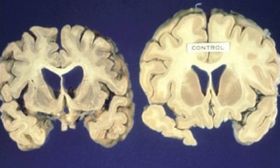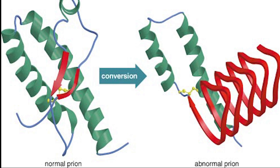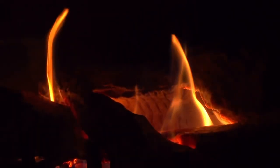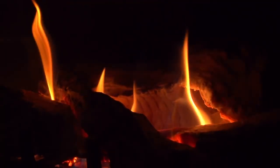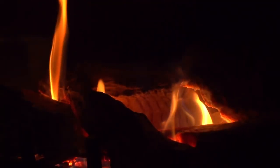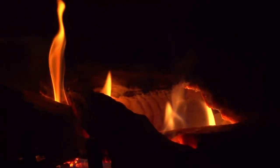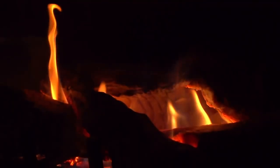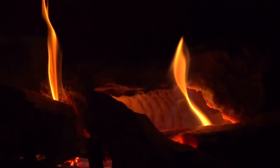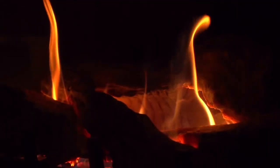BSE is caused by proteins known as prions, a type of protein that can act as a replicating pathogen, much like a virus. The prion is malformed and misfolded, and capable of warping other proteins and turning them into harmful prions. Such proteins are commonly found in the brain and nervous system, and so when the disease takes hold, the consequences can be devastating, destroying the very structure of the brain. It is a neurodegenerative disease, with symptoms not immediately apparent.